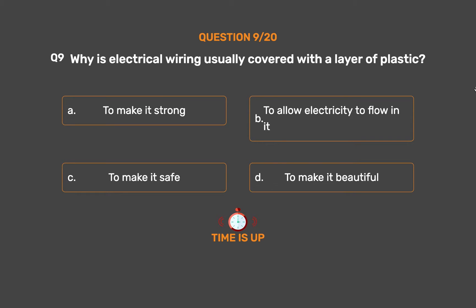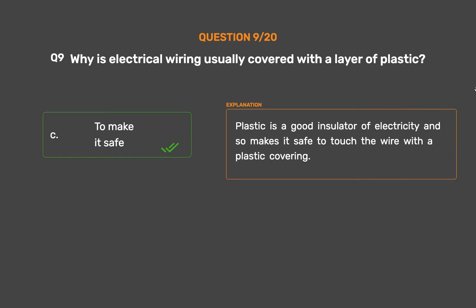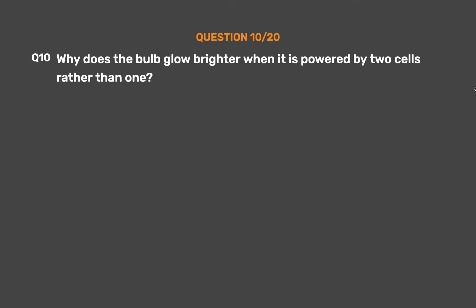The correct answer is Option C: To make it safe. Plastic is a good insulator of electricity and so makes it safe to touch the wire with a plastic covering.